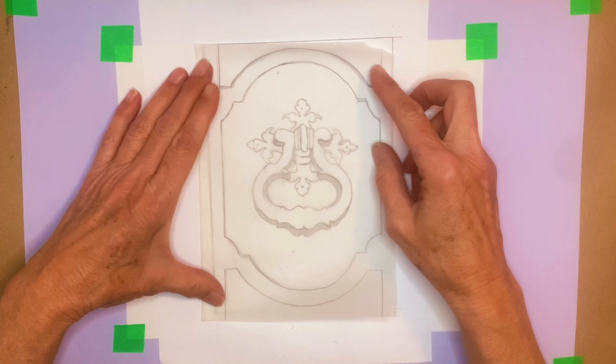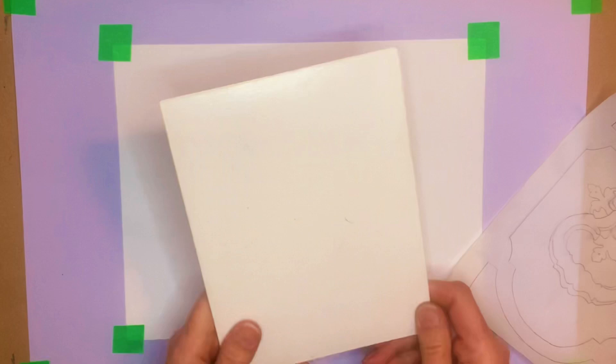In this case a piece of mat board is being used. It has been coated several times with polymer medium to seal it from solvents, ink, and water.